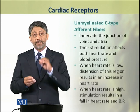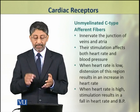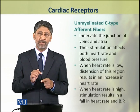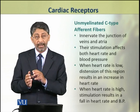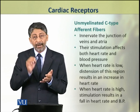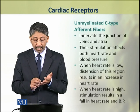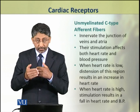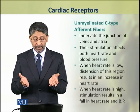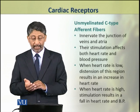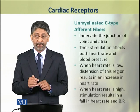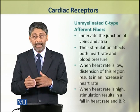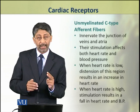The unmyelinated C type afferent fibers innervate the junction of veins and atria. Their stimulation affects both heart rate and blood pressure. When heart rate is low, distension of this region causes an increase in heart rate. However, when heart rate is high, stimulation of these fibers causes a decrease in heart rate and blood pressure. Thus, C type unmyelinated fibers have a bidirectional effect.